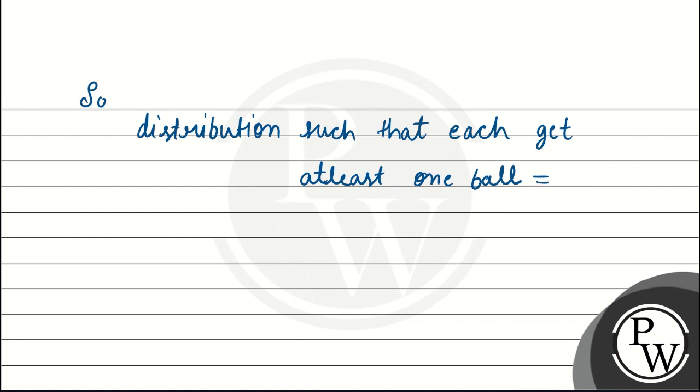So how many such cases will there be? This will be 3 to the power 5, this will be 3 to the power 5, minus 90, minus 3. This will be 3 power 243, minus 93.